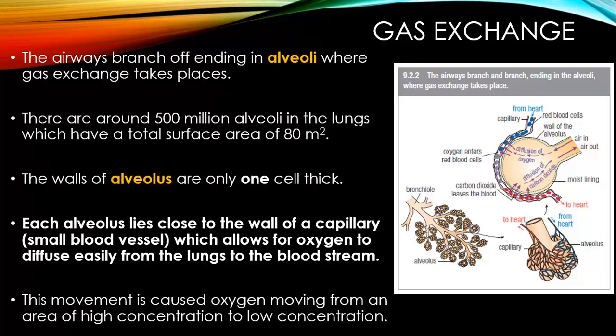Nostril hairs filter the larger particles, and mucus filters the smaller ones. The epiglottis is a flap of tissue that stops food and drink from entering into the windpipe and the lungs. The larynx also helps protect the trachea. The cilia are tiny hair-like structures that line the entire system, and they also help to filter out those finer particles.